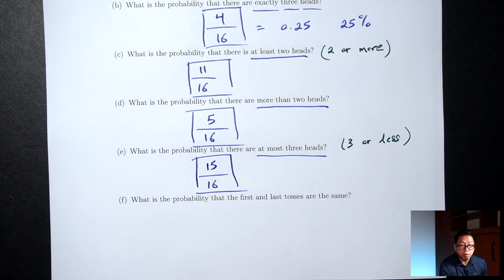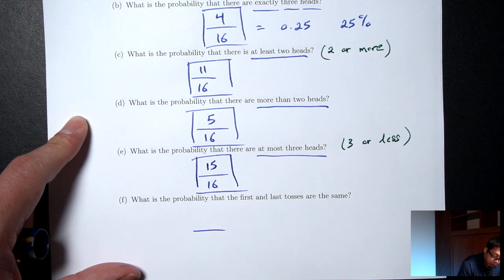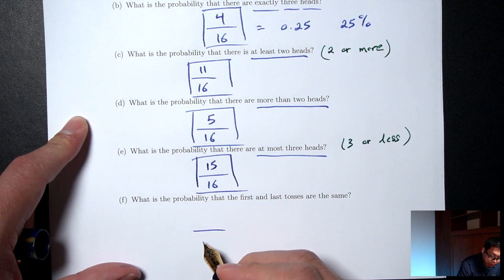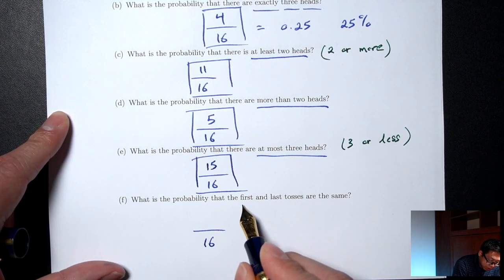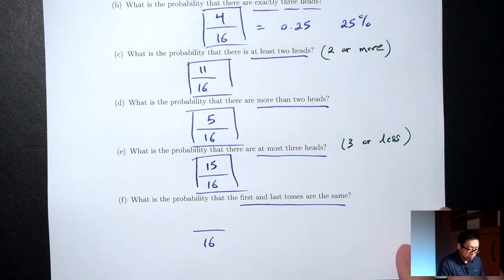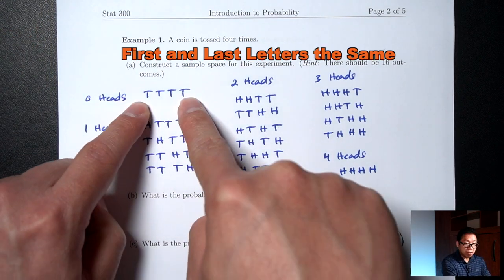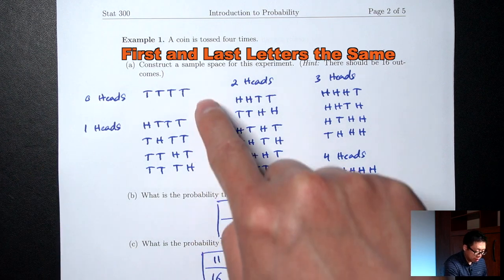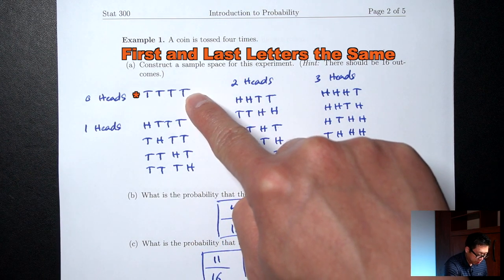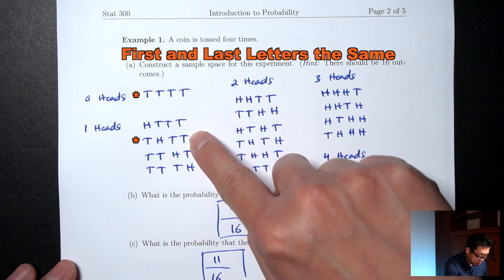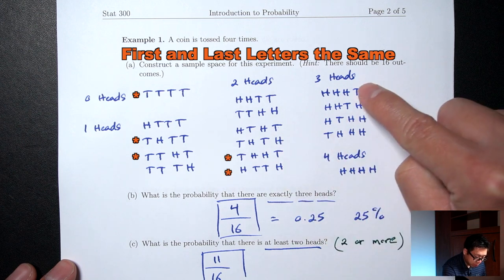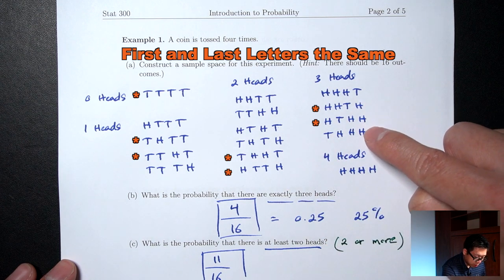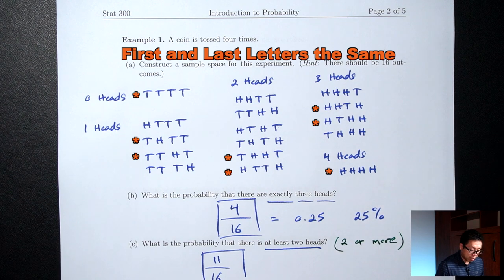Part F: what's the probability that the first and last tosses are the same? Bottom is 16. We need either both tails or both heads in the first and last positions. Counting those outcomes: TTTT, TTHT, THTT, HTTT, HHHH, HHTH, HTHH, THHH — that's 8 outcomes where the first and last tosses are the same. Probability is 8/16.